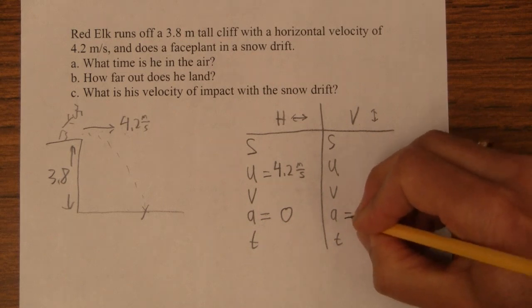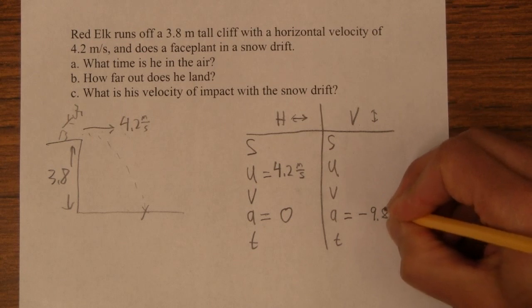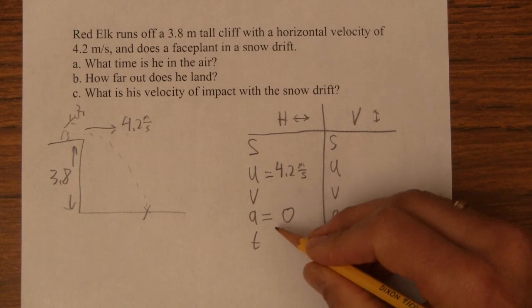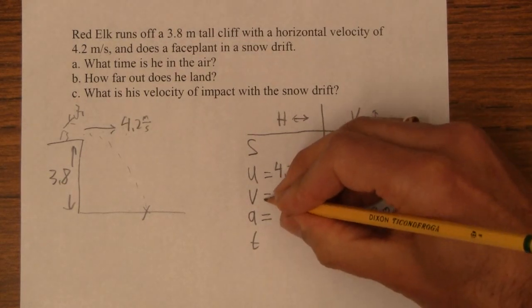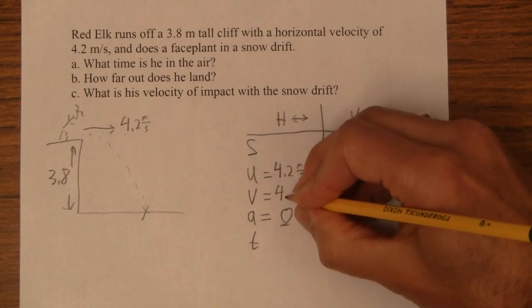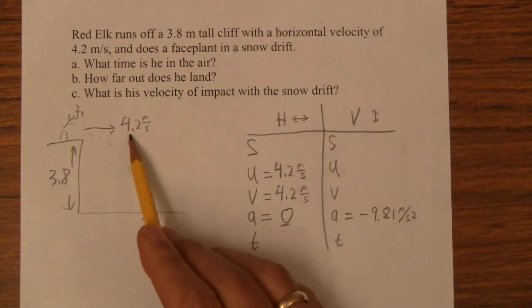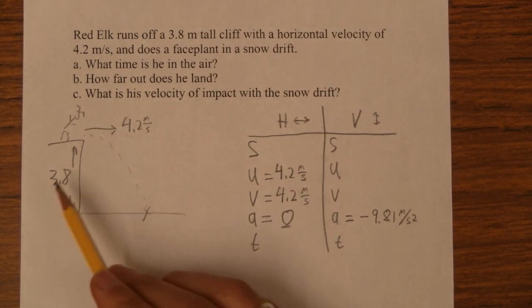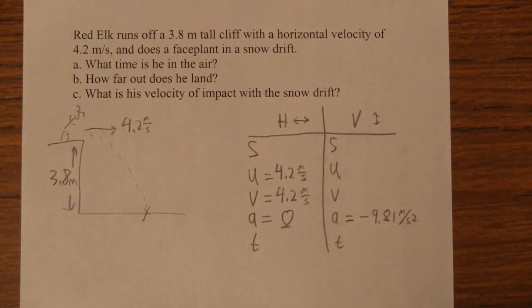And then vertically, of course, his acceleration, because of gravity, is going to be negative 9.81 meters per second squared. Let's see, what else do we know? Oh, if we know the acceleration is zero, don't we know the final velocity is the same? All the way down, he's going to have the same horizontal velocity. This stays constant because air friction really isn't going to slow him down for the short time he's in the air. That's what we're saying.